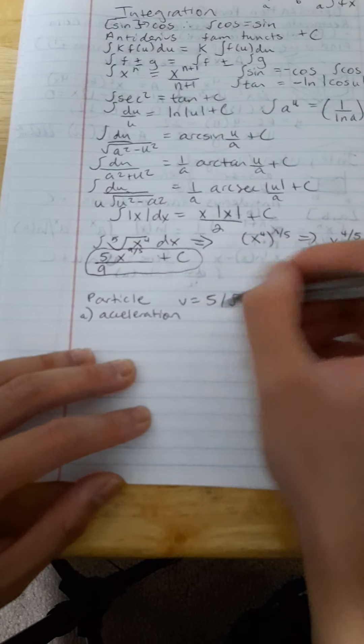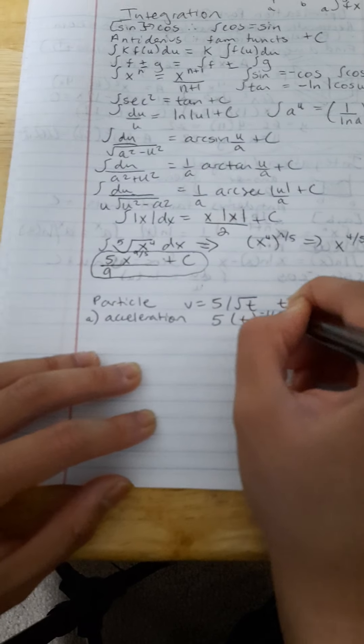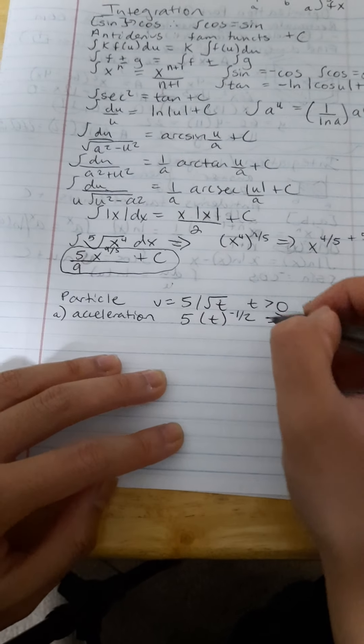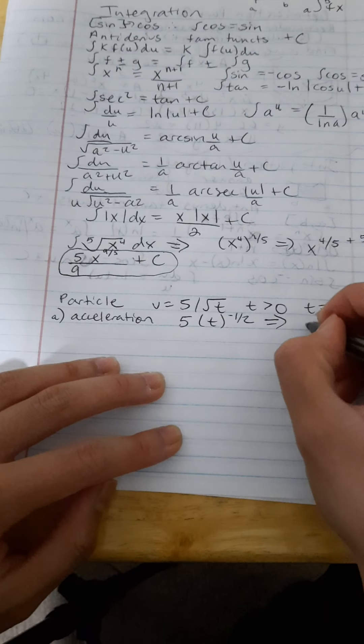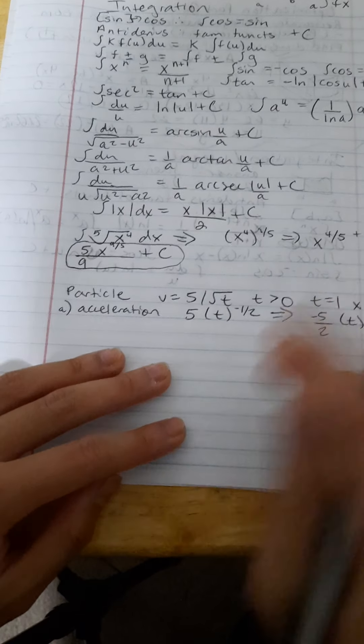And so, how do we get that? So, we're just going to take the derivative of this, this is 5t to the negative 1/2, that's going to become, if we take the derivative of that using the derivative power rule, get negative 5/2 t to the negative 3/2. Alright,